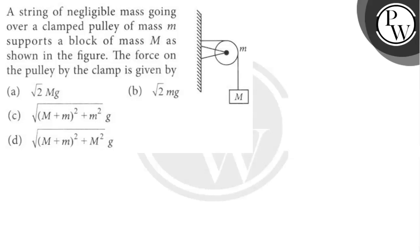Hello Bacho, let's read the question. The question is a string of negligible mass going over a clamped pulley of mass small m supports a block of mass capital M as shown in figure. The force on the pulley by the clamp is given by.